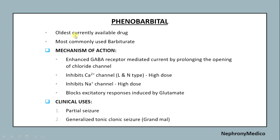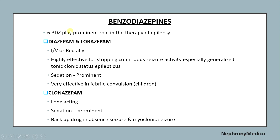Phenobarbital is the oldest currently available drug and the most commonly used barbiturate. Mechanism of action includes enhanced GABA receptor-mediated current by prolonging the opening of the chloride channel, inhibition of calcium and sodium channels, and blocking excessive responses induced by glutamate. Clinical uses include partial seizure and generalized tonic-clonic seizure. Benzodiazepines play a prominent role in the therapy of epilepsy. Diazepam and lorazepam are very effective in febrile convulsions in children. Clonazepam is a backup drug in absence seizure and myoclonic seizure.